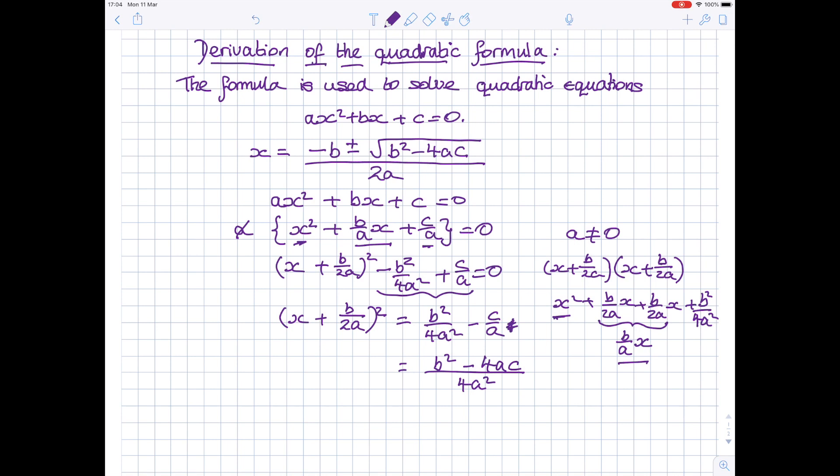Right, now I'm going to square root both sides. The left-hand side just becomes x plus b over 2a. The right-hand side becomes the square root of, but remember when you square root, you get a positive value and a negative value. So, the square root of the top, b squared minus 4ac over the square root of the bottom, so it's over the square root of 4a squared.